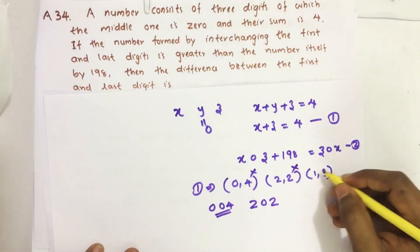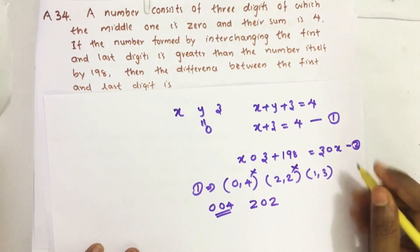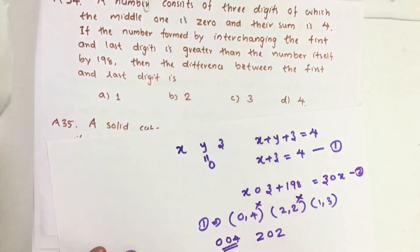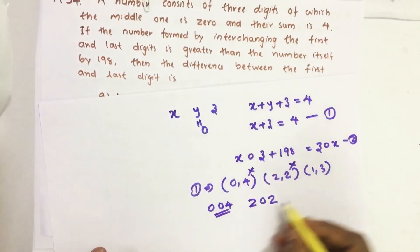Then, the only possible value is (1, 3). Its difference is 2. Our answer is B, option B. So, let us put this also.